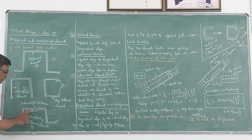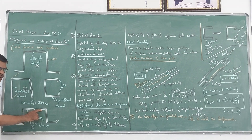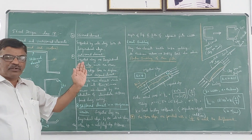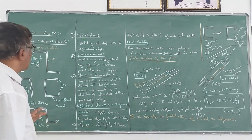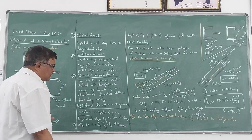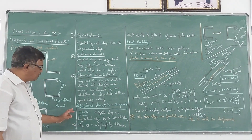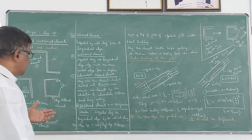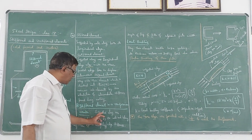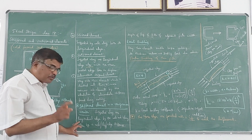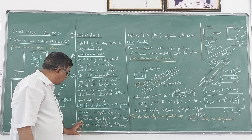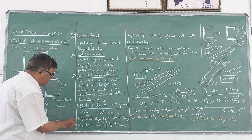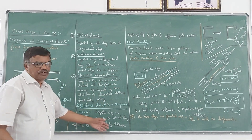You can have one intermediate stiffener or you can have two or more. So this is how we can define stiffened, unstiffened, and intermittently stiffened elements.